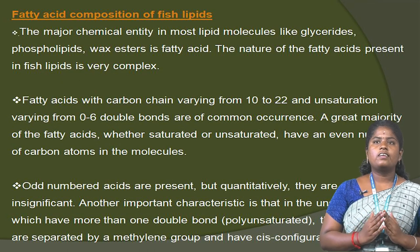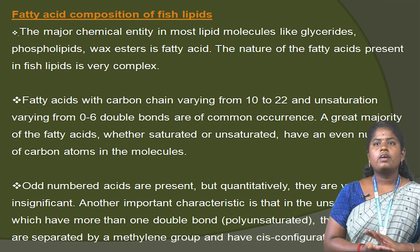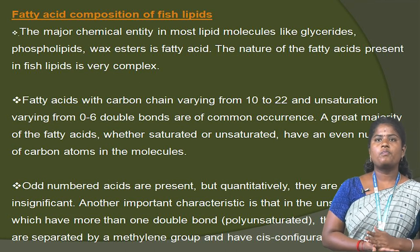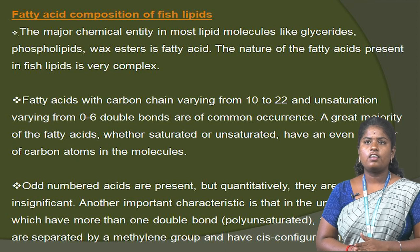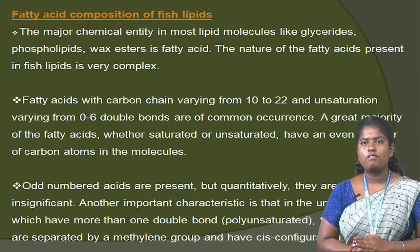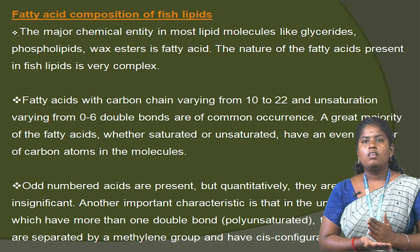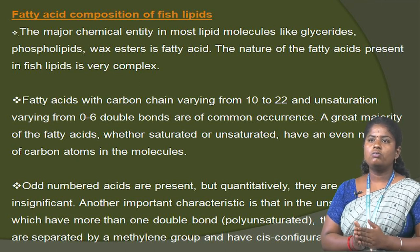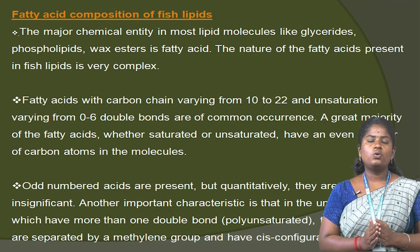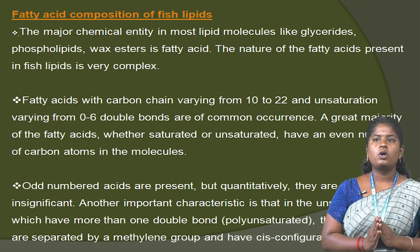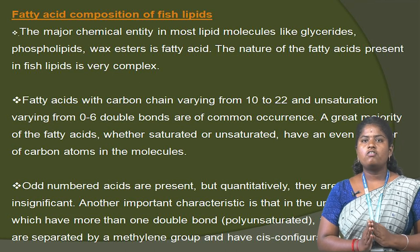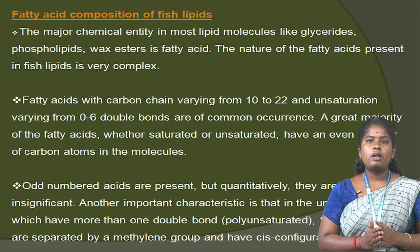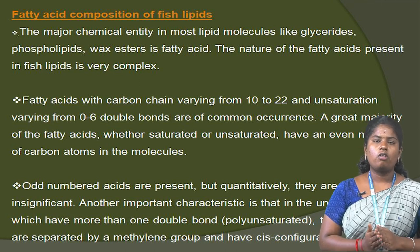The fatty acid composition of fish lipids. The major chemical entity in most lipid molecules — like glycerides, phospholipids, waxes and esters — is the fatty acid. The nature of the fatty acids present in fish lipid is very complex. Fatty acids with carbon chains varying from 10 to 22, and unsaturation varying from 0 to 6 double bonds, are of common occurrence. The great majority of fatty acids, whether saturated or unsaturated, have an even number of carbon atoms in the molecule.